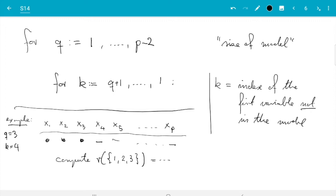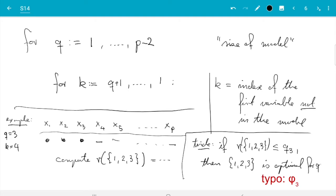Now, now comes the trick. In this example, if r, if there is less than or equal to phi_q, then 1, 2, 3 is optimal for all models with three variables. That's the claim. And I think that is the only thing you need to wrap your head around. And that, I admit, is a bit tricky. But once you got that, I think the rest will be easy.